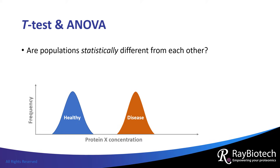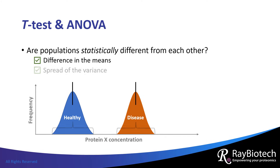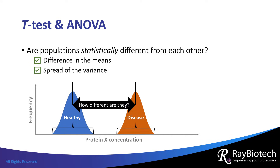T-Test and ANOVA determine whether populations are statistically different from each other by measuring the population's means or averages, and by measuring the spread of the population's variances or distributions. In other words, T-Test and ANOVA examine how the population's means differ and how their distributions overlap.